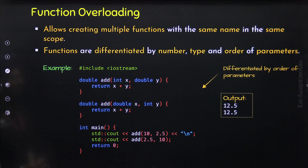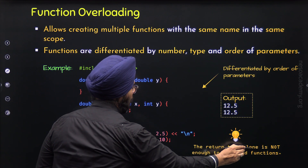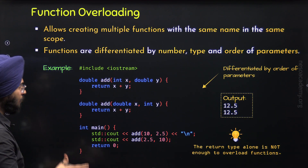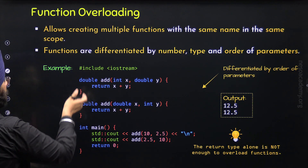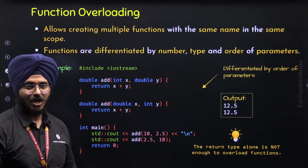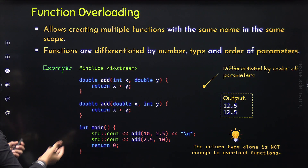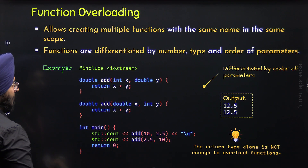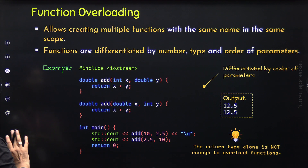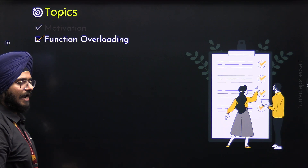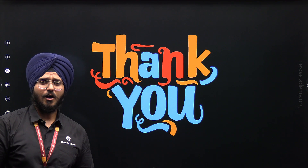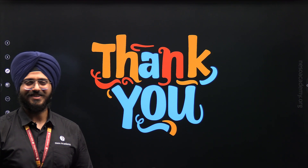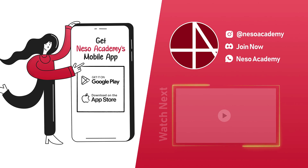There is one important point to emphasize: the return type alone is not enough to overload functions. If you want to perform function overloading, we cannot depend on the return type — return type cannot differentiate functions. We can have functions with the same or different return types; this does not matter. Return type alone is not sufficient for function overloading. With this, we have completely understood the concept and are done with this lecture. Thank you for watching, and I will see you in the next one.